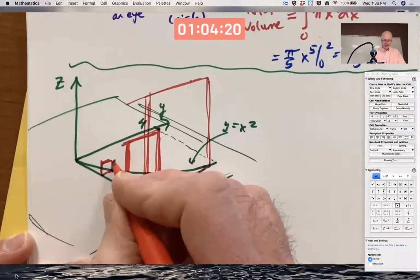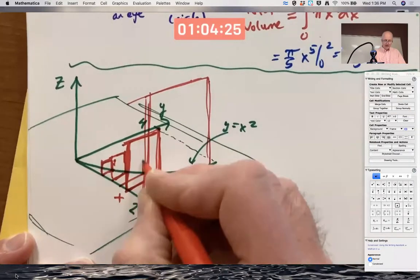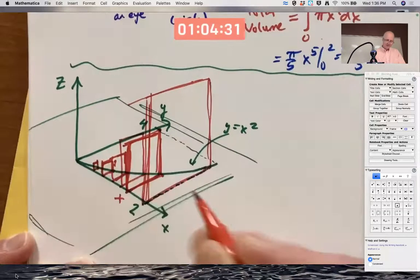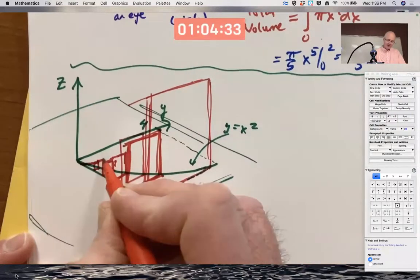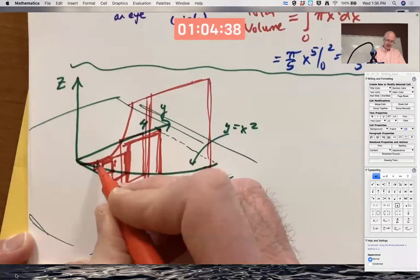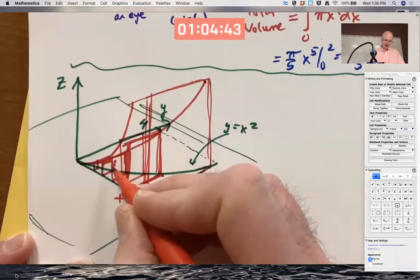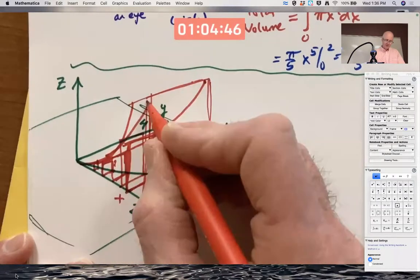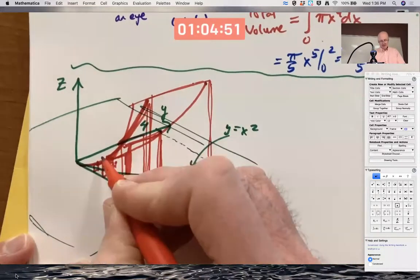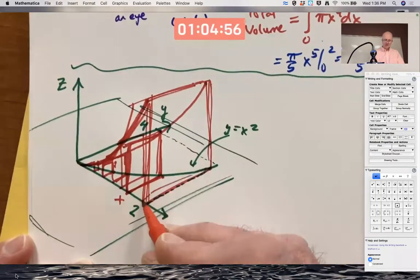If you try to draw a bunch of these, slowly you start to see in your imagination a solid. It's kind of a weird horn-like thing. Not expecting perfection in your drawing, just something reasonable. That's all I can achieve as well.